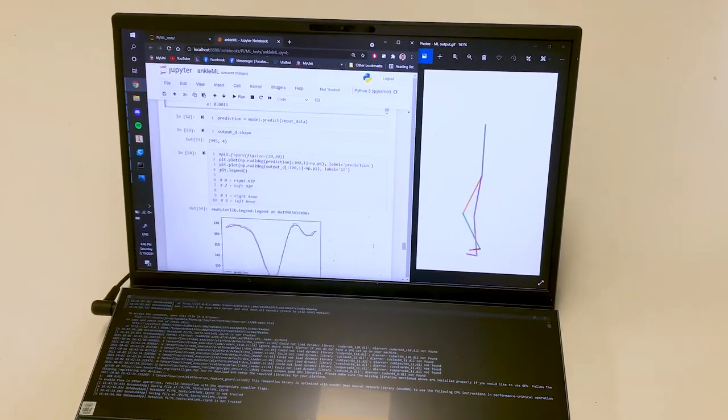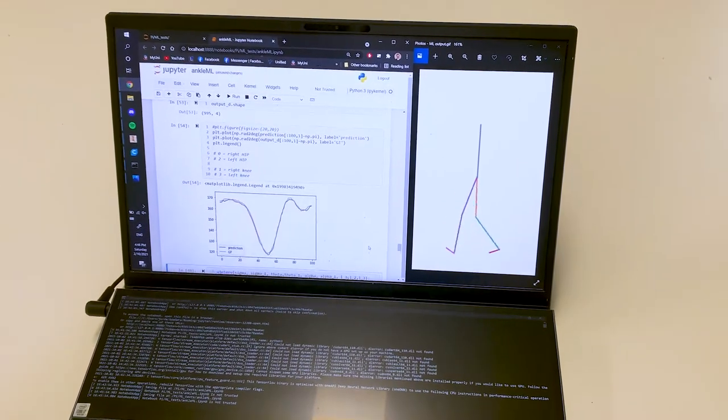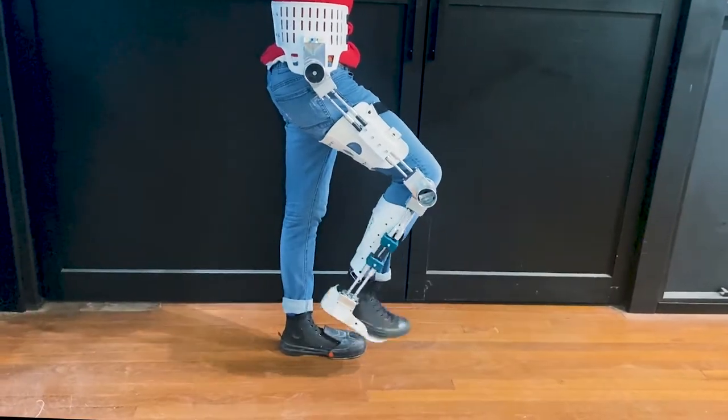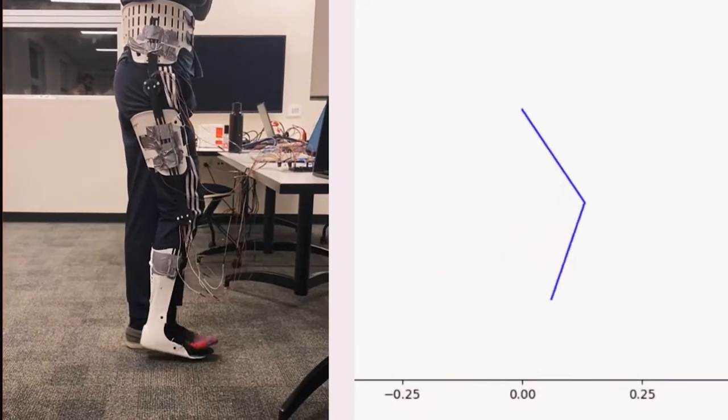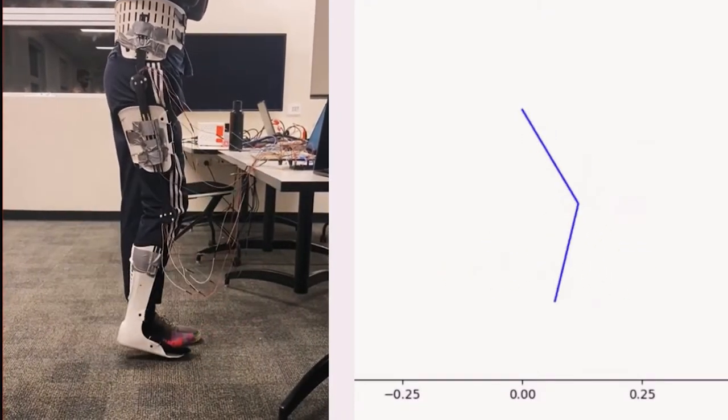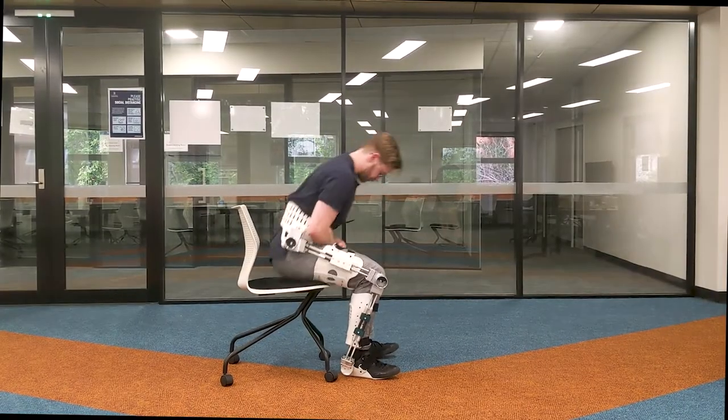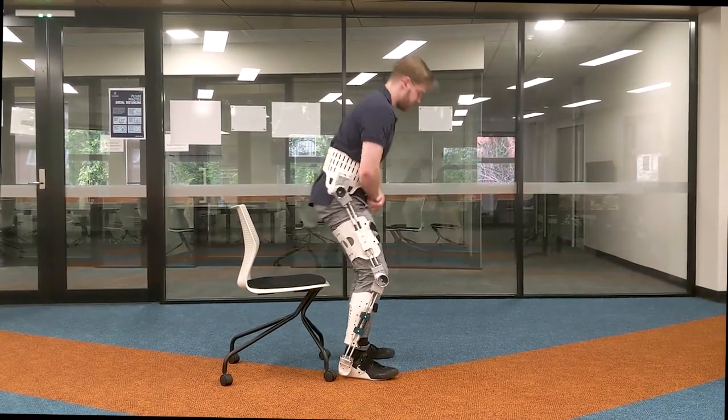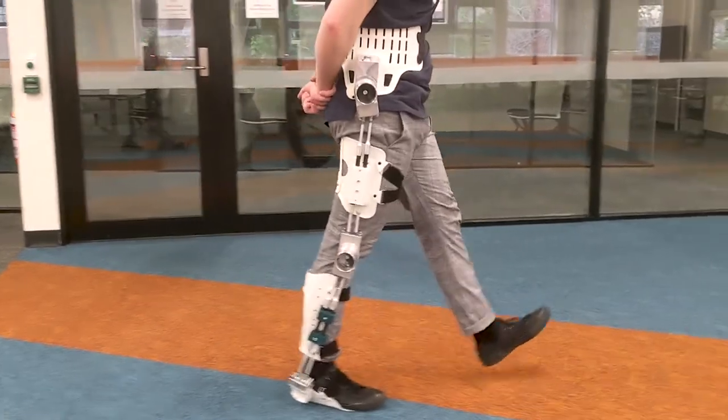Currently the project has produced a robust mechanical structure and with the aid of sensors and machine learning can accurately track and predict the user's gait. As a prototype, the exoskeleton is well on its way to helping users with movements such as sitting, standing, and walking.